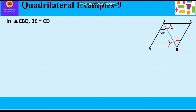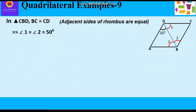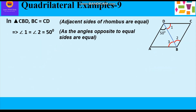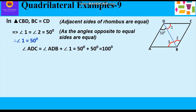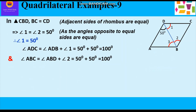In triangle CBD, BC = CD as adjacent sides of the rhombus are equal. Therefore angle 1 = angle 2 = 50°, since angles opposite to equal sides are equal. So angle 1 is also 50°. Angle ADC = angle ADB + angle 1 = 50° + 50° = 100°. Similarly, angle ABC = angle ABD + angle 2 = 50° + 50° = 100°.